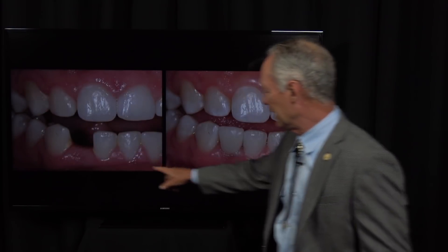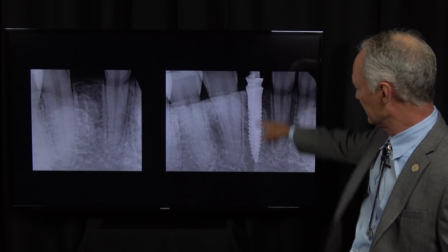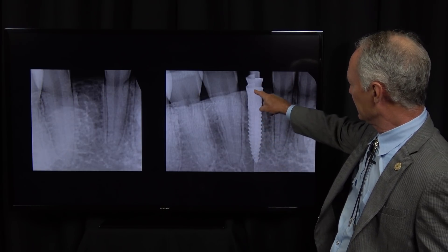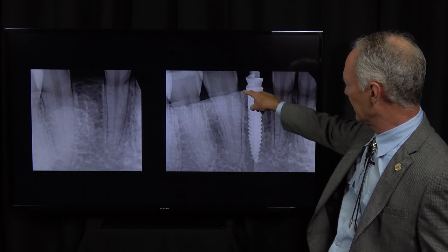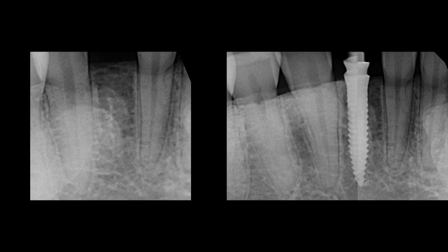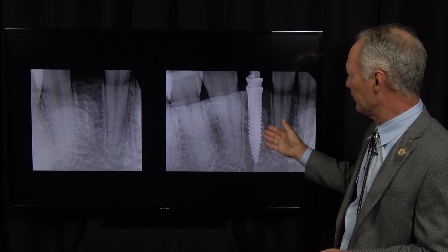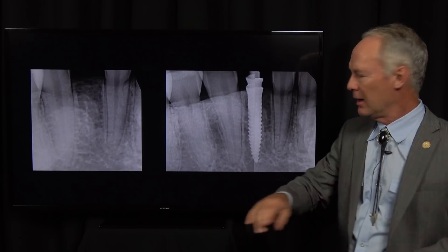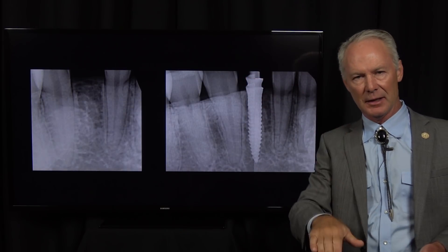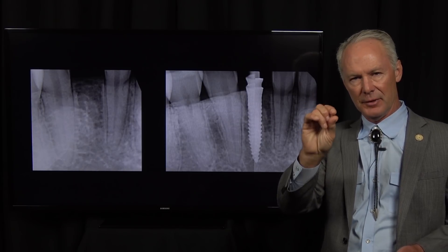Here's the before, and this is after we placed the small diameter implant and cemented a crown onto the implant. These are dense threads here and small threads here. I'd like to have all the threads under the bone, but these threads can either be in the bone or the soft tissue. And I want this shelf to be slightly subgingival so when you're placing a small diameter implant and not reflecting a flap, you go by the soft tissue to determine how deep you place the implant.